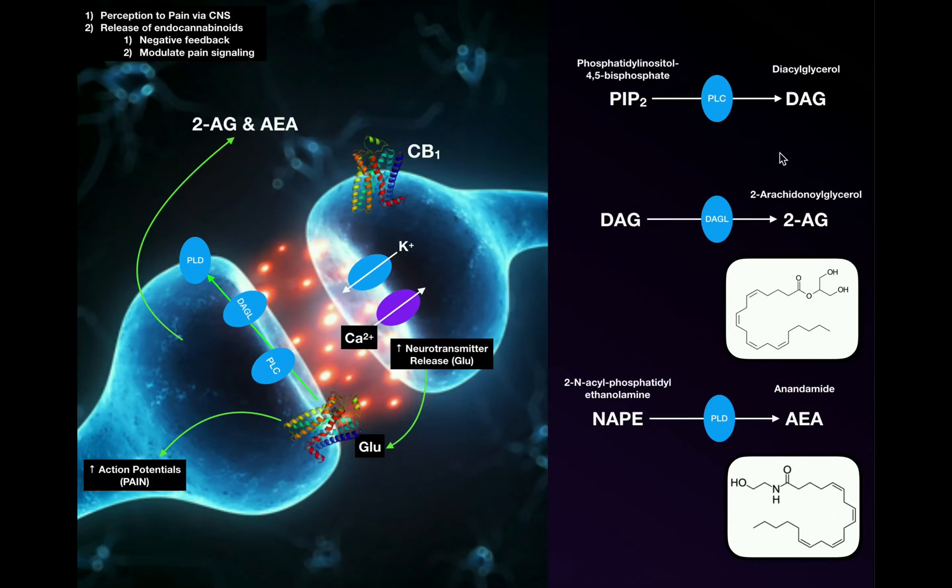The first class of cannabinoids are those that are made naturally via biosynthetic pathways by your own cells. These are called endocannabinoids, and there's really two major ones. The first one has the abbreviation 2-AG. This is called 2-arachidonylglycerol. It's derived from arachidonic acid.